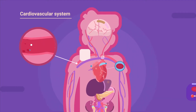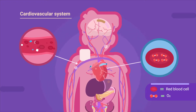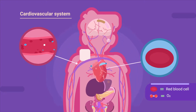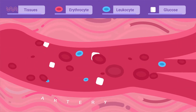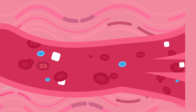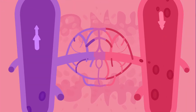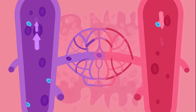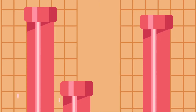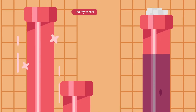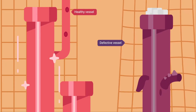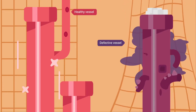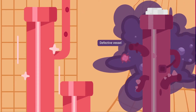Every time our heart beats, our organs receive oxygen and nutrients through the blood that flows through our arteries. Thanks to the oxygen and nutrients they receive, our organs can stay healthy. But in the human body everything is a question of balance. High concentrations of glucose damage and deform small and large blood vessels. Furthermore, tissues are also damaged directly.